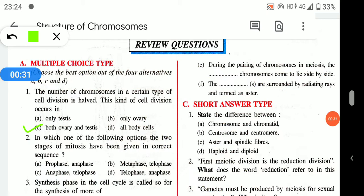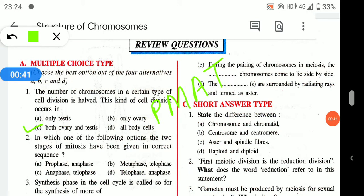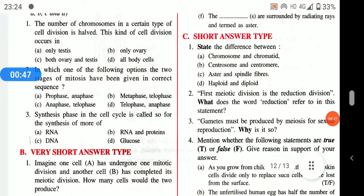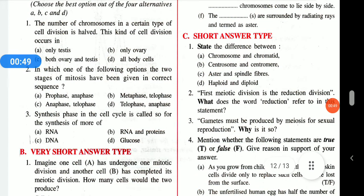In which of the following options have the two stages of mitosis been given in the correct sequence? The correct sequence is prophase, metaphase, anaphase, telophase — so the correct answer here is anaphase and telophase.